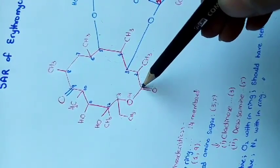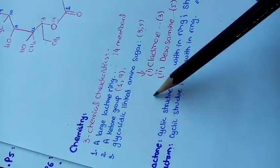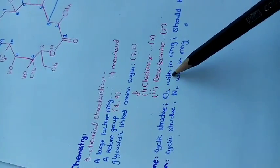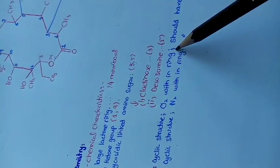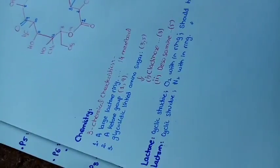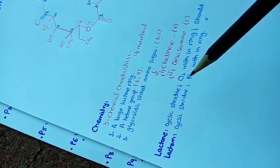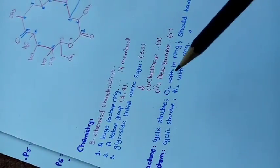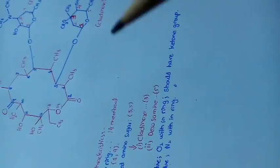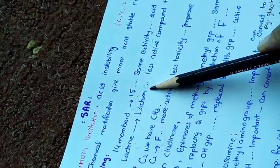At position 1, erythromycin contains a lactone ring. A lactone is a cyclic structure containing oxygen within the ring with a ketone group. A lactam is also a cyclic structure, but in place of oxygen it contains nitrogen within the ring with a ketone group. If the lactone ring at position 1 is converted into a lactam ring, we get a compound which is less active than erythromycin.